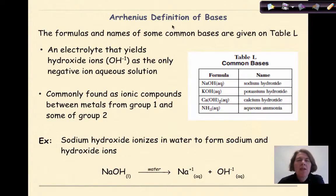So let's talk about the Arrhenius definition of bases. The formulas and names of some common bases are given on table L of your reference table. So you want to make sure that you know the location of this, that you've looked over the formulas and the accompanying names. A base is an electrolyte that yields hydroxide ions, OH-1, as the only negative ion in an aqueous solution.